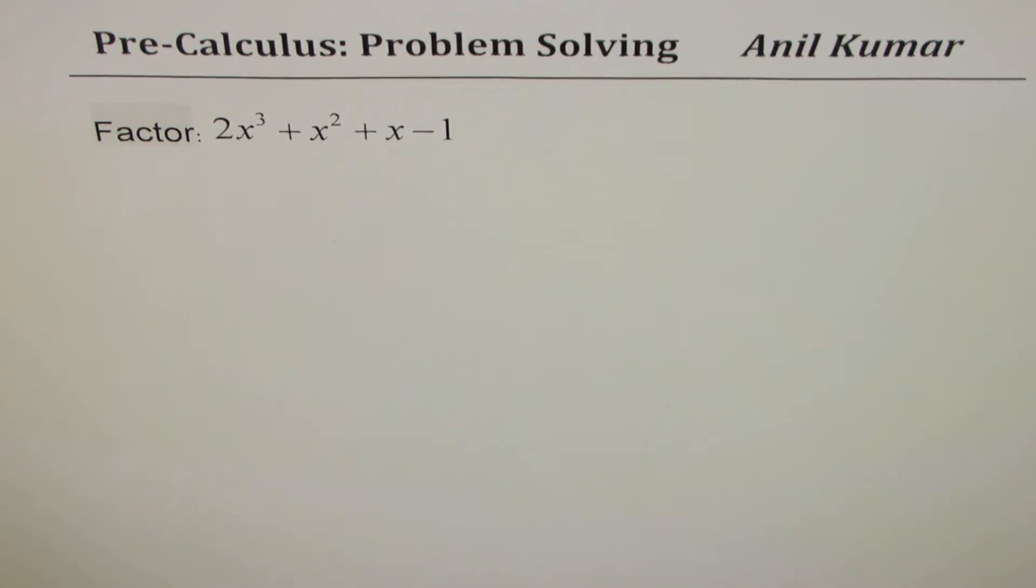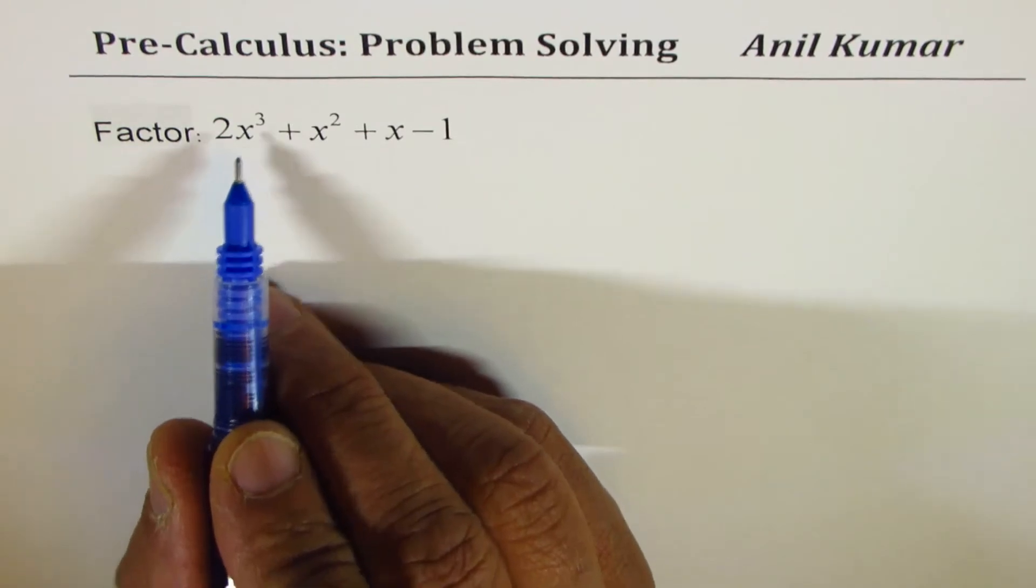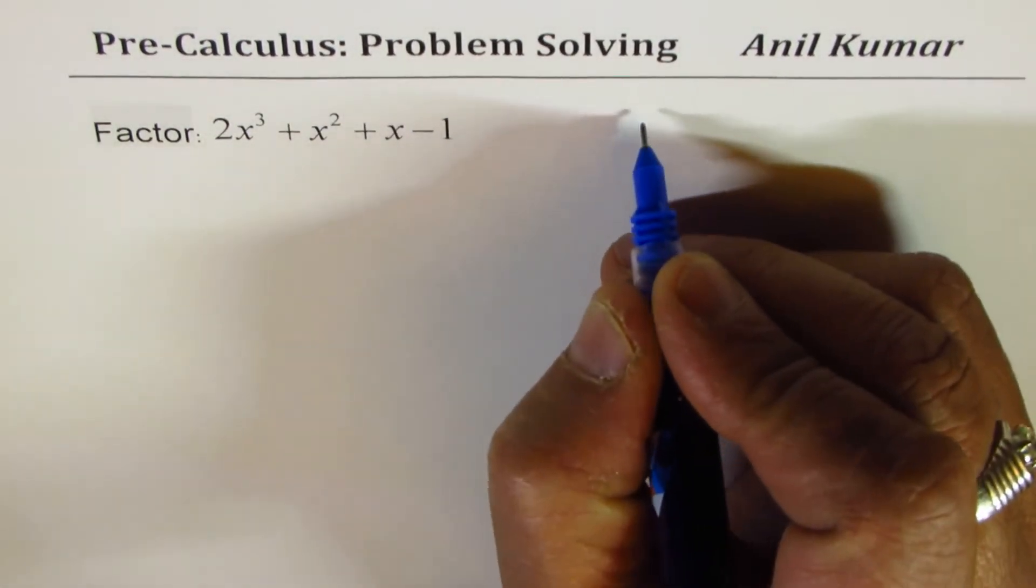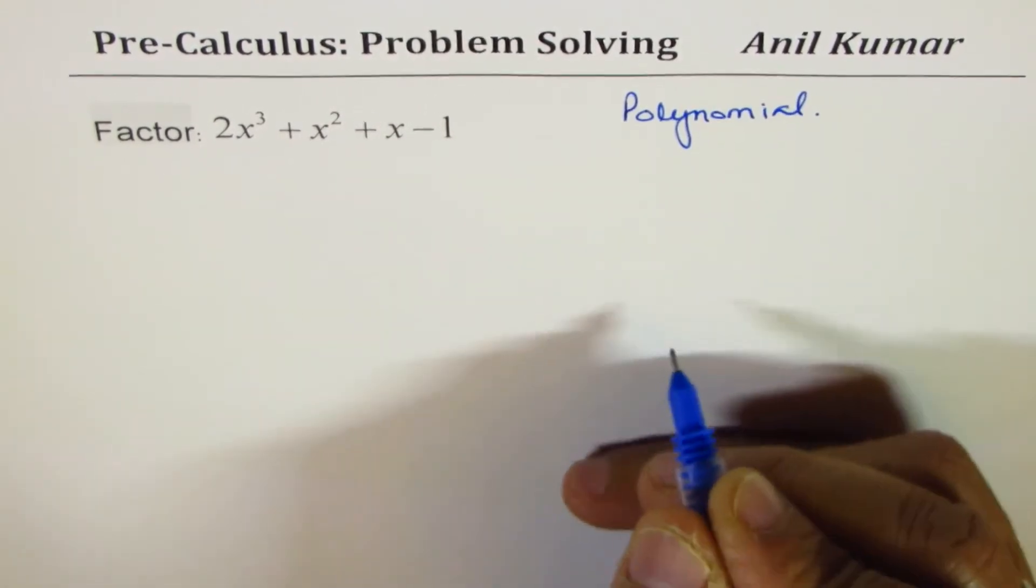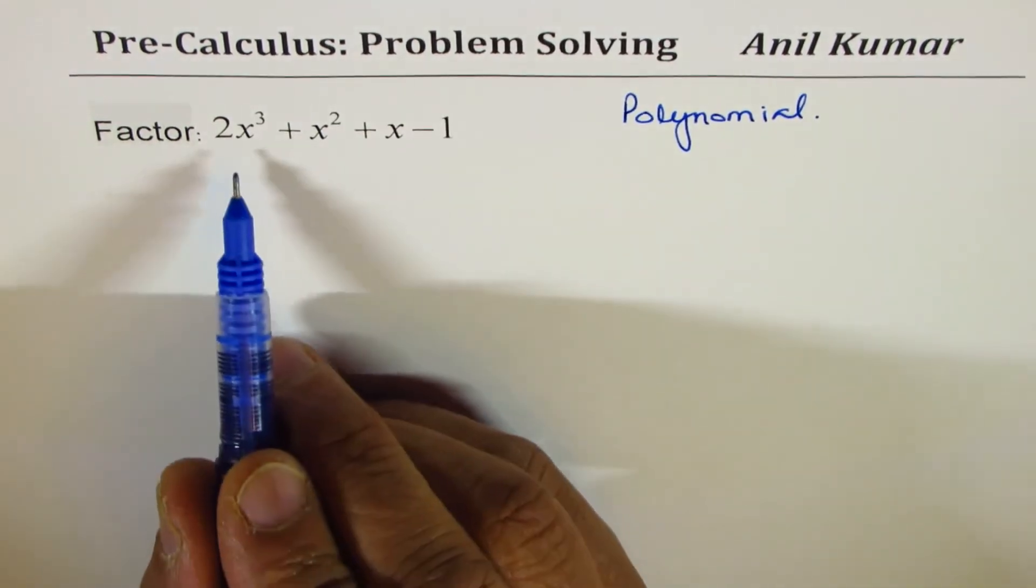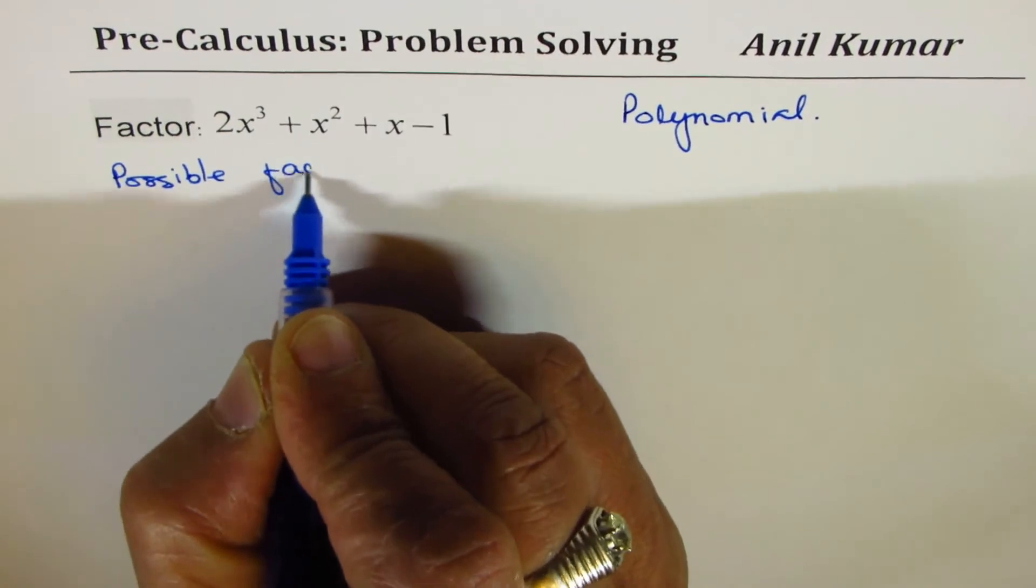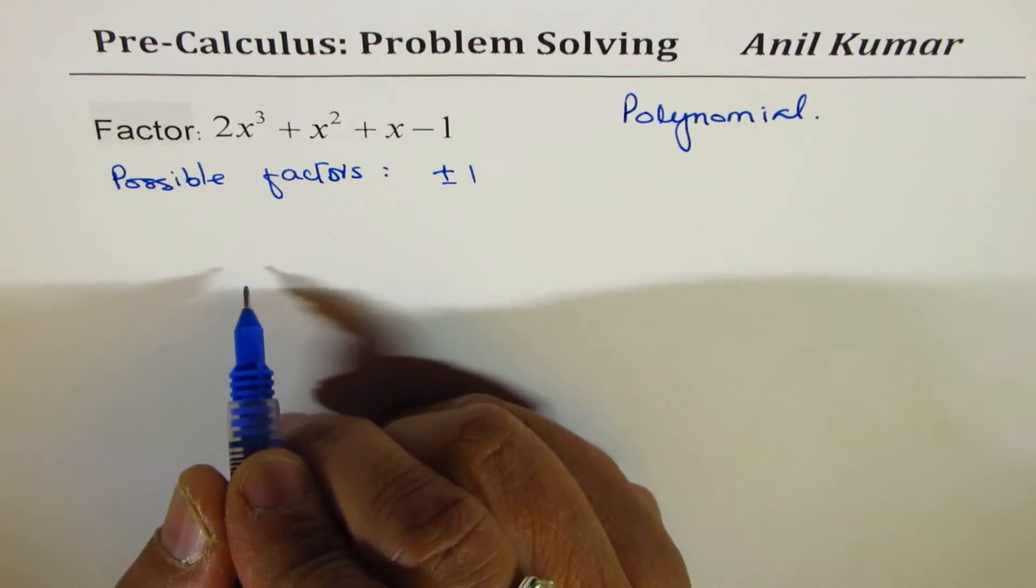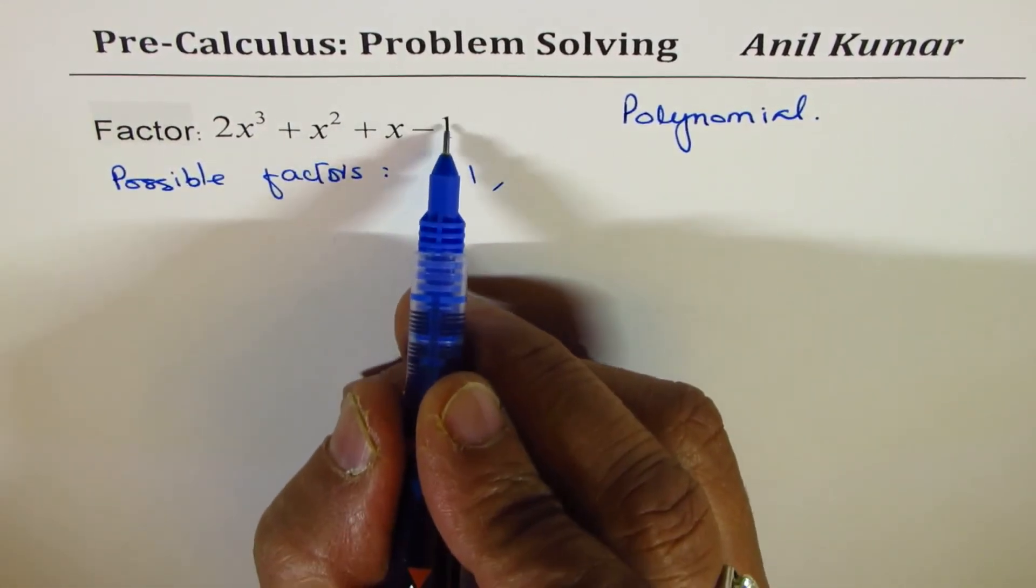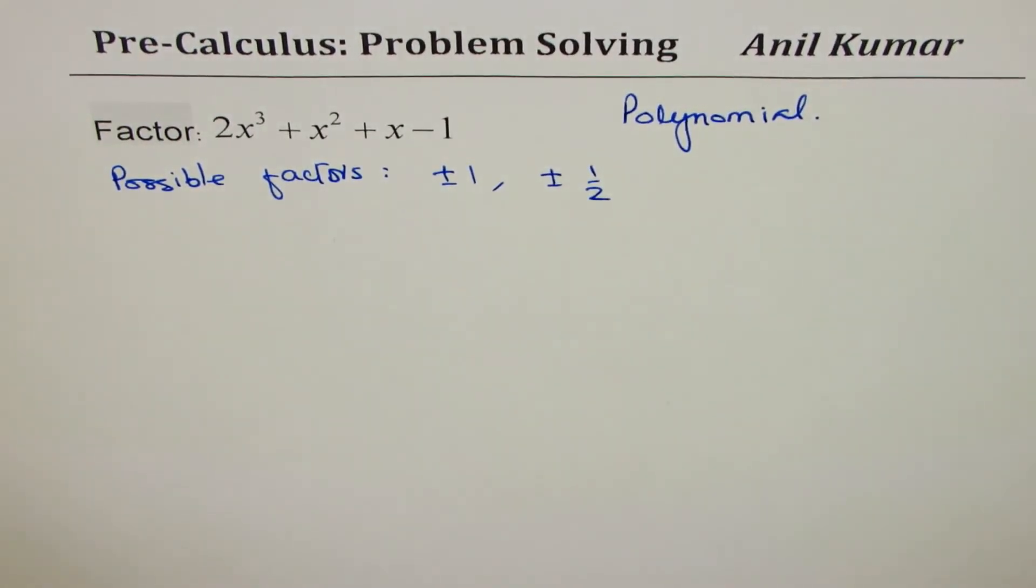Now here is the last one. We'll look into polynomial division. Now we have a cubic equation here. Now how to factor a polynomial - I have taken a very simple example. Now the possible factors are ±1, which are factors of the constant, or factors of 1 divided by factors of 2. That gives us ±1/2 also. So these are the possible factors.